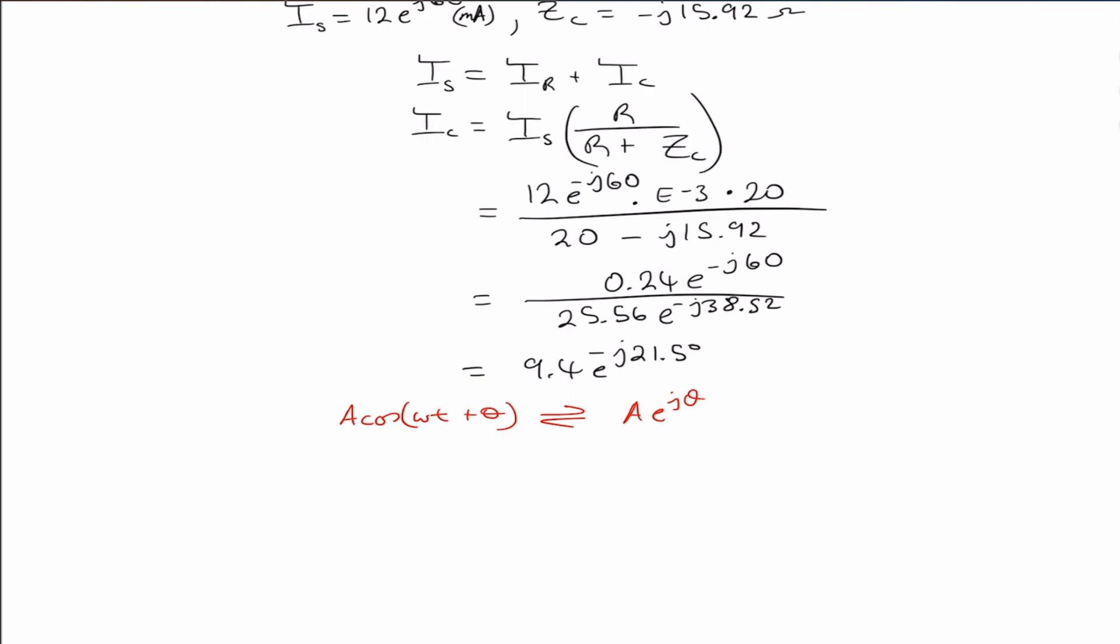So therefore we can convert that over to the time domain, where I_CFT is 9.4 times cosine of omega t, which is 2 pi times 10 to the power 4 times t, minus 21.5 degrees, and that's in milliamps.